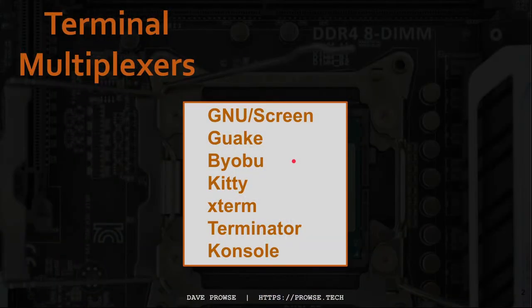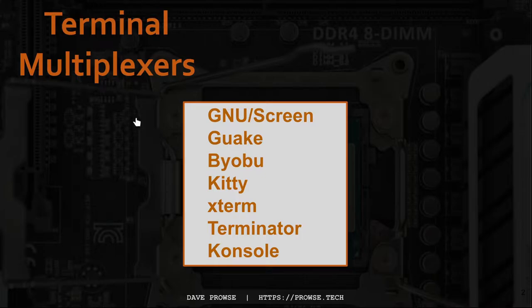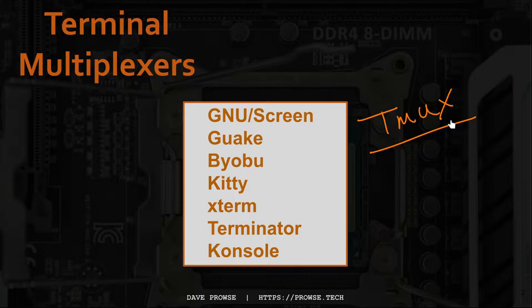There are plenty of terminal multiplexers out there. GNU Screen, otherwise just known as Screen, is very popular. There's also GWAKE, Biobu, Terminator, and many others, including one I use a lot called Tmux. I use Tmux more on servers and I'll show that in a separate video. But on my desktop the one I use most often is Tilex — that's my favorite and it works best for me.